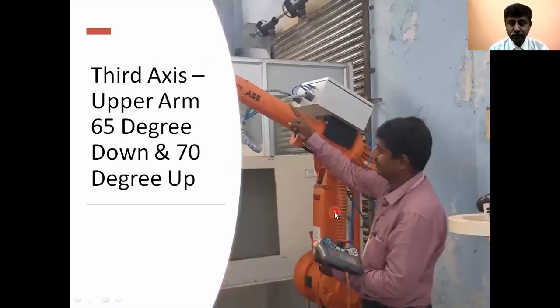After that you have the third arm which looks like a tusk of an elephant. It can move down by 65 degrees and it can move up to 70 degrees from its normal position. These are the major axes that are used to take a component from one place and move it to another place.